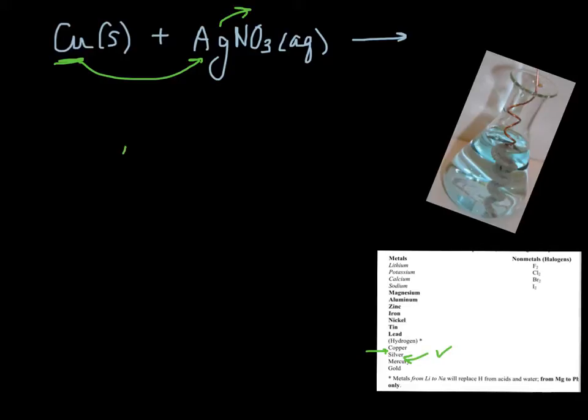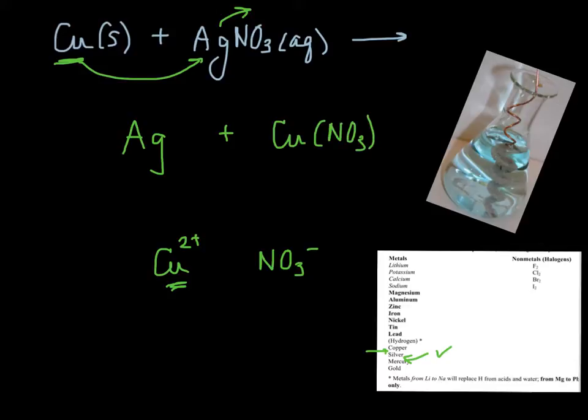So it comes in. It kicks out the silver, and it's going to make a compound with copper. Copper is a transition metal, so I'll have to show you how to figure out what ion it will form, but I'm going to tell you it's two plus, and with nitrate. So the other product here is copper two nitrate Cu(NO3)2. And, of course, we should balance it with a couple of twos.